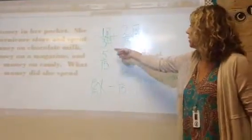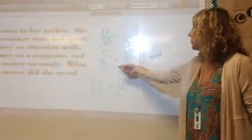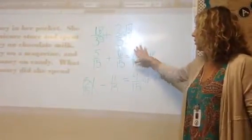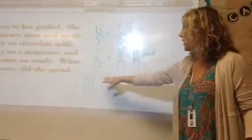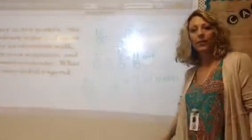You do start with getting a common denominator. You add your numerators, so you keep your denominator the same. And you are trying to take that away from whatever her whole amount is to find your missing amount. Okay, thanks.